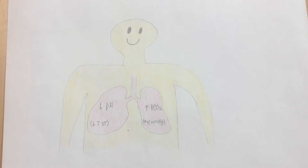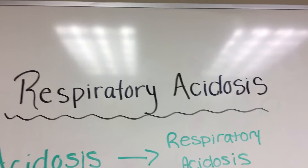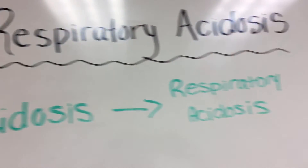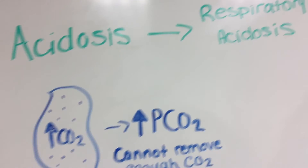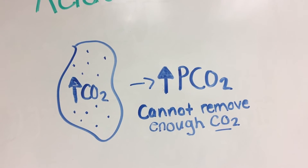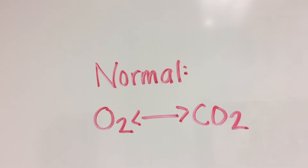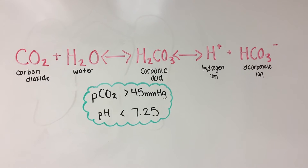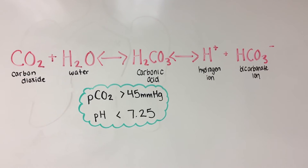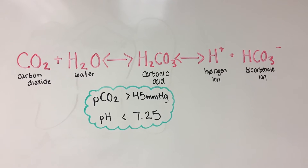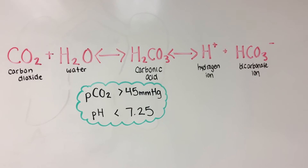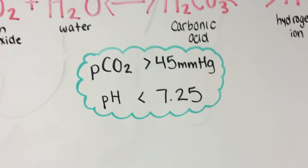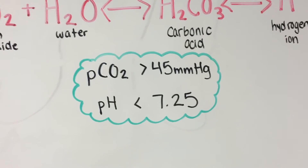Now we are going to talk about the acid-base balance. Respiratory acidosis is also called hypoventilation. Acidosis causes the body's pH levels to decrease, making it acidic. Respiratory acidosis is when carbon dioxide accumulates in the lungs and cannot be removed, causing a rise in the partial pressure of carbon dioxide. Normally, carbon dioxide should pass through the lungs in gas exchange with oxygen. Respiratory acidosis often occurs when a person breathes shallowly and slowly, or when gas exchange is hampered by different diseases. This causes carbonic acid levels in the blood to increase. Hydrogen levels drop and carbonic acid becomes dissociated, causing release of hydrogen ions and the pH levels become low. The partial pressure of carbon dioxide is greater than 45 mmHg and the pH is lower than 7.25.